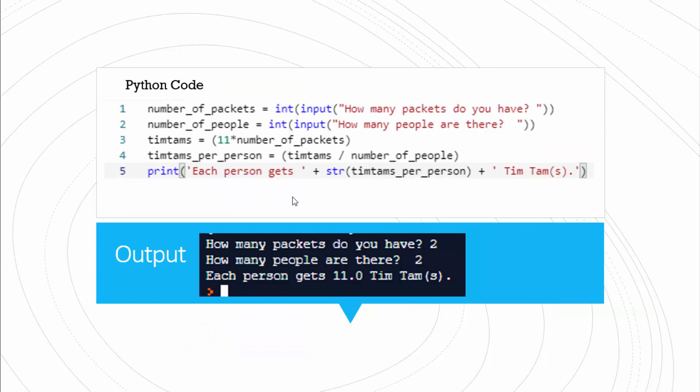So what does this look like in real code? So in real code in Python, to do this we'll need to set up our variables: number of packets, number of people. When setting up variables, your variables should have meaningful names so that you can easily identify them later. Because we're applying mathematical functions to these variables, we need to make sure that they are integers, and we also need to work with this function of input. Now this will allow us, when we run the actual program, that it will allow the computer to import our numbers into the program.